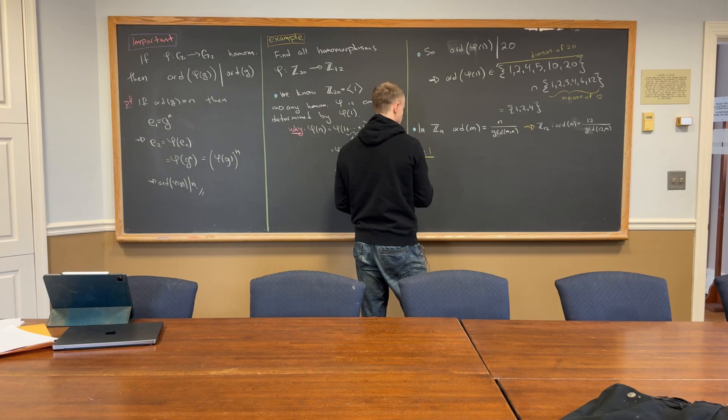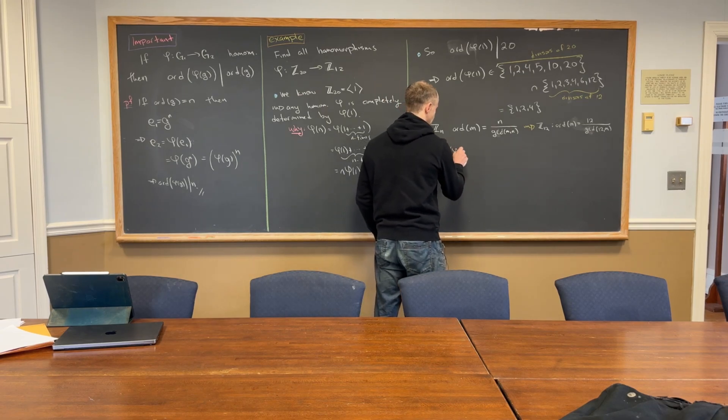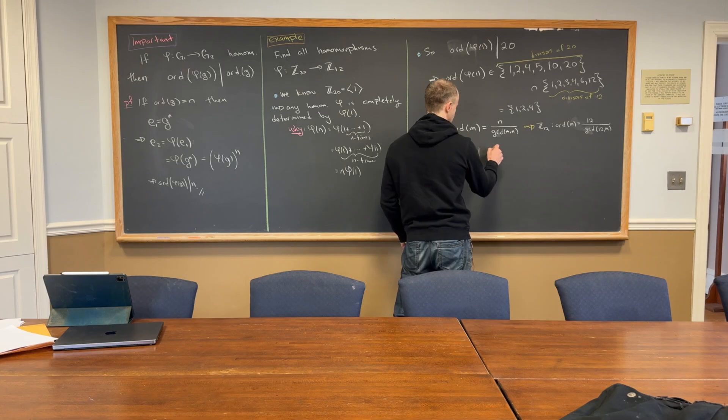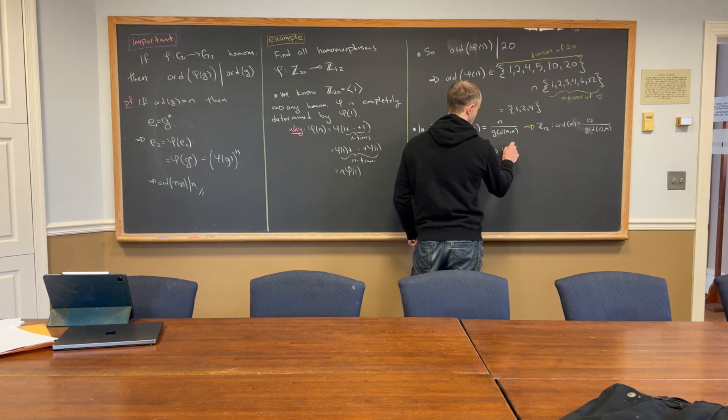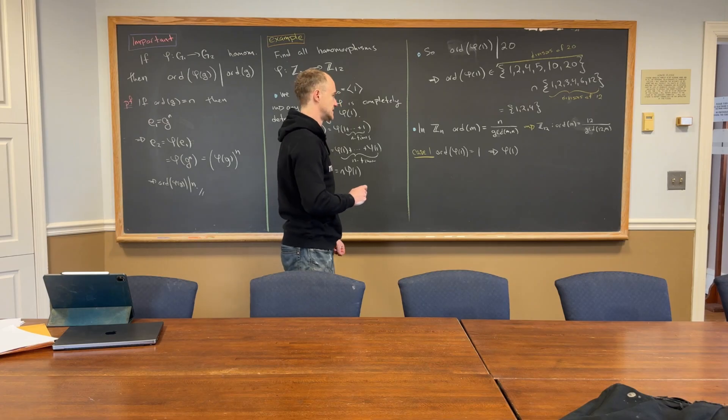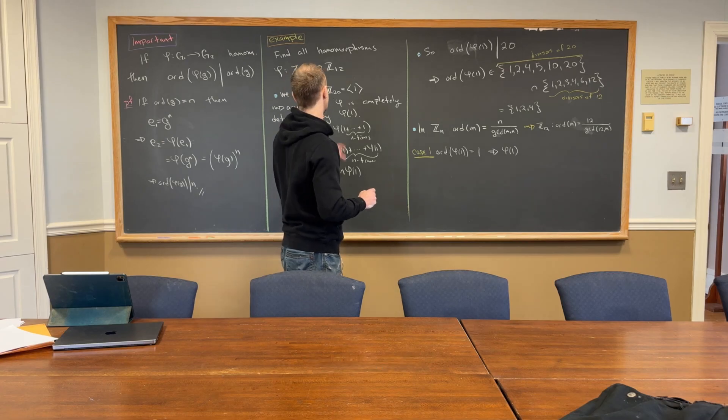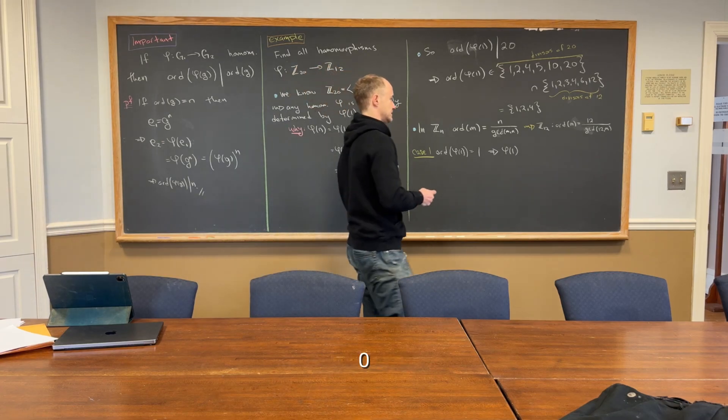Okay, so, now, let's look at case number one. Let's say case number one is what happens if the order of phi of one equals one? Yeah, what does that mean phi of one is? No, you're thinking correctly, though, like, phi of one is the identity, but what's the identity in Z12? Zero. Zero.